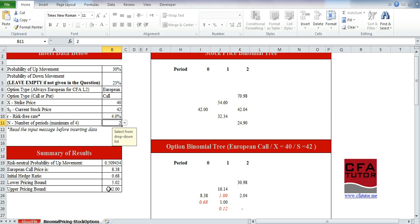Over here, you find the remaining summary of the results, which shows you the risk-neutral probability of up movement. It shows you the European call price and the initial hedge ratio, the lower and upper pricing bound.